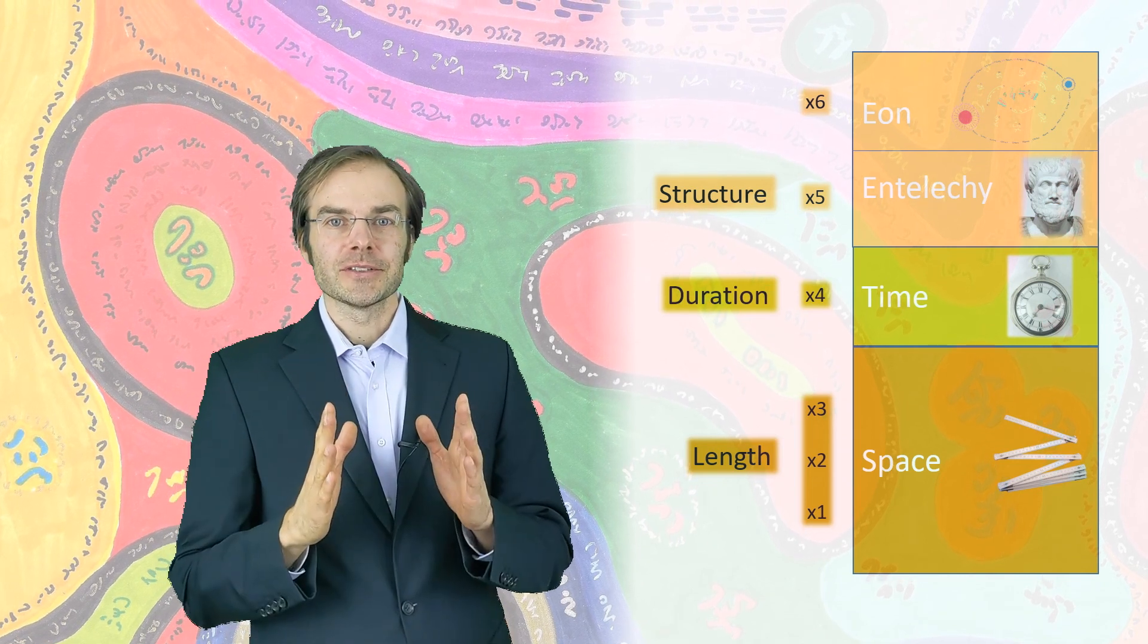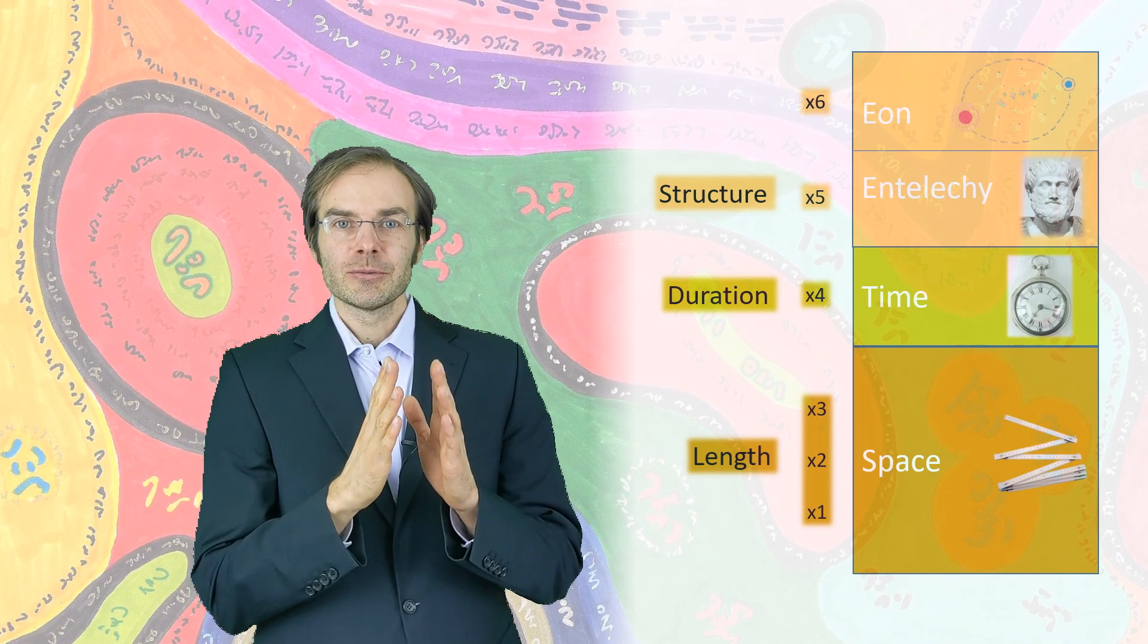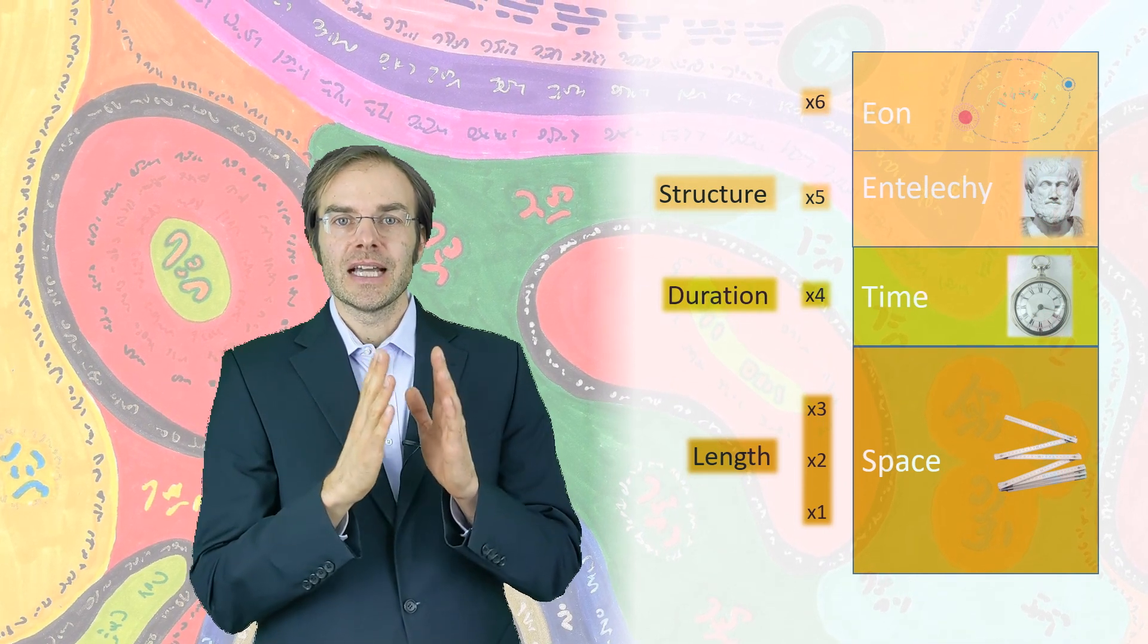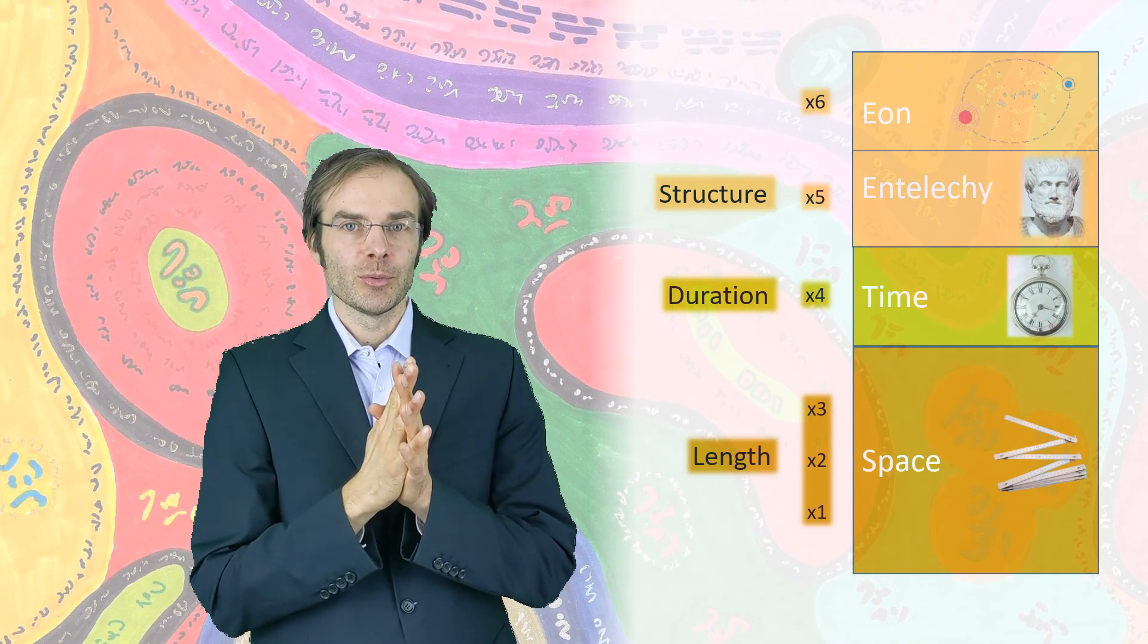Two structures which are similar are close to each other. And two structures which are virtually identical, they are at the same place, at the same coordinate, if you will.